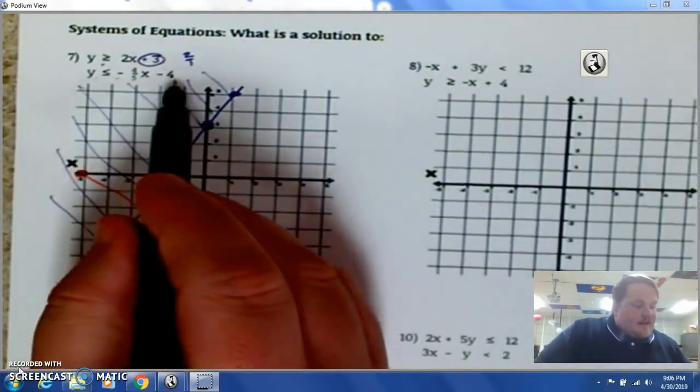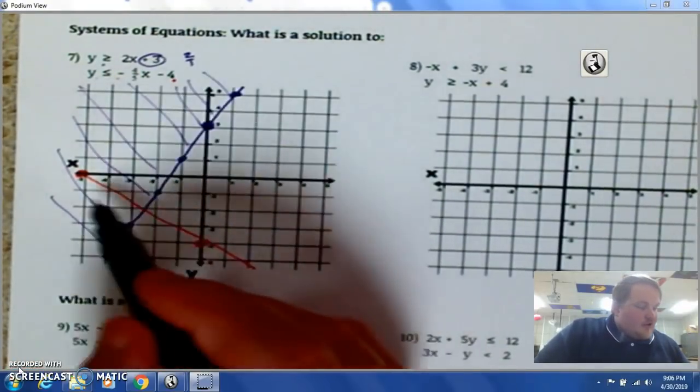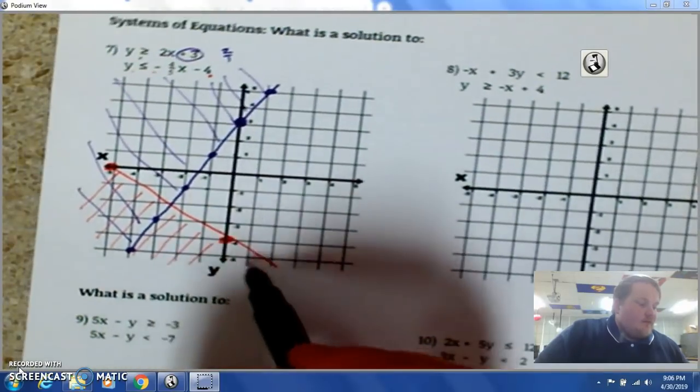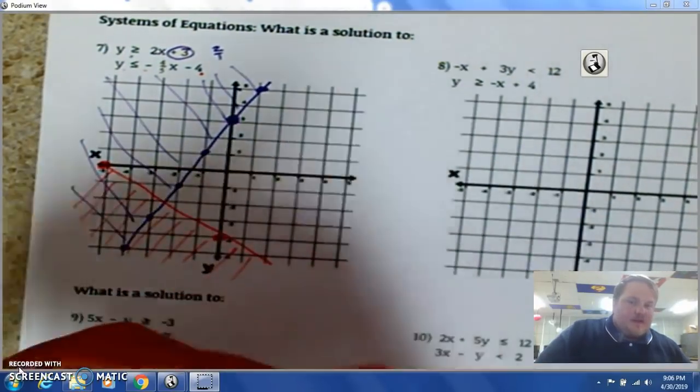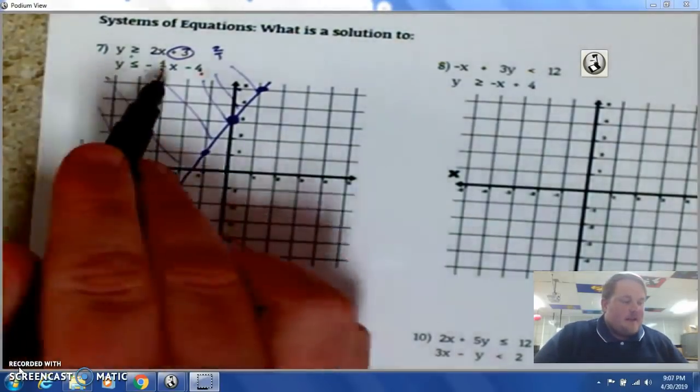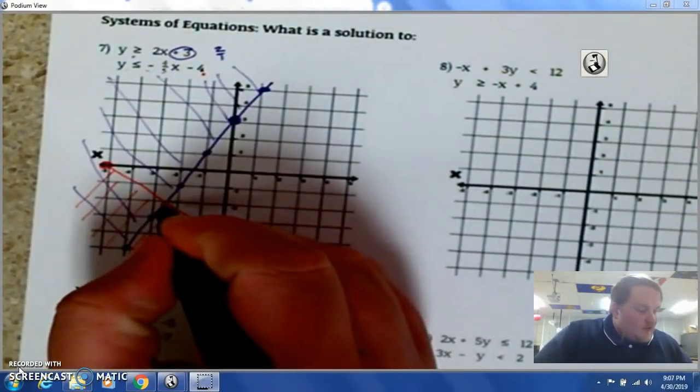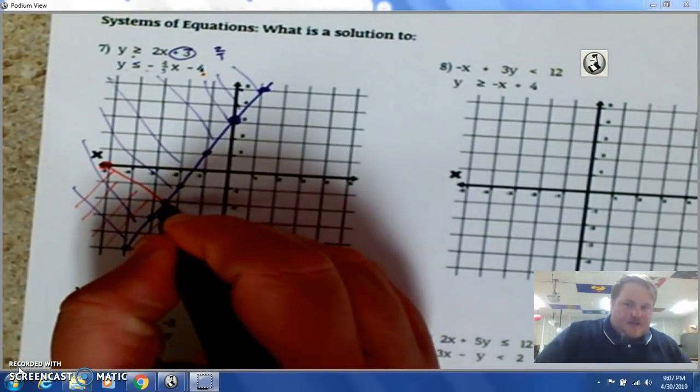And, it says y is less than negative 4. So, I shade everything below negative 4. The line. You know. I shade the bottom side of the line. It says y is less than that negative 3. Right here is where those two lines intersect.